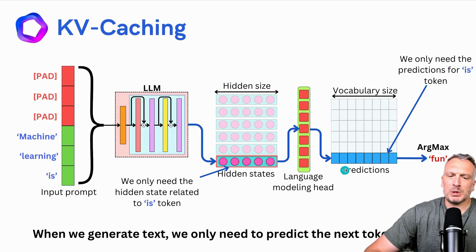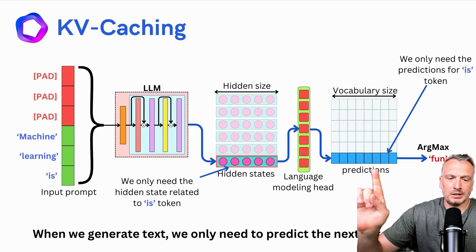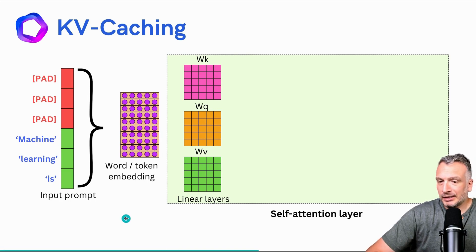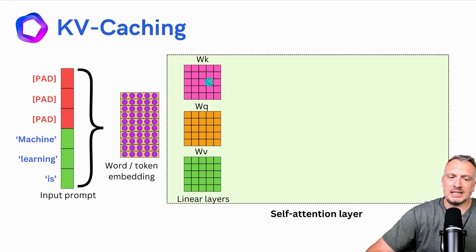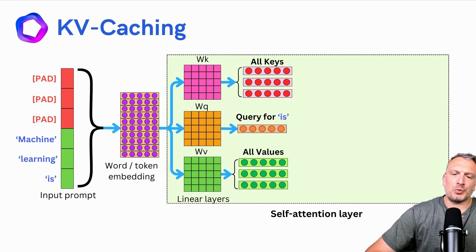As a consequence, we only need the hidden states that relate to these predictions. All the other hidden states are not used in the decoding process — we only need the hidden states related to the 'is' token. When we generate text, we only need to predict the next token. So let's look at what happens in the self-attention layer. We have the input sequence and the word or token embeddings, and here we have the three different projection matrices that exist in the self-attention layer. What we need from the projection matrix is a query vector for the word 'is'.